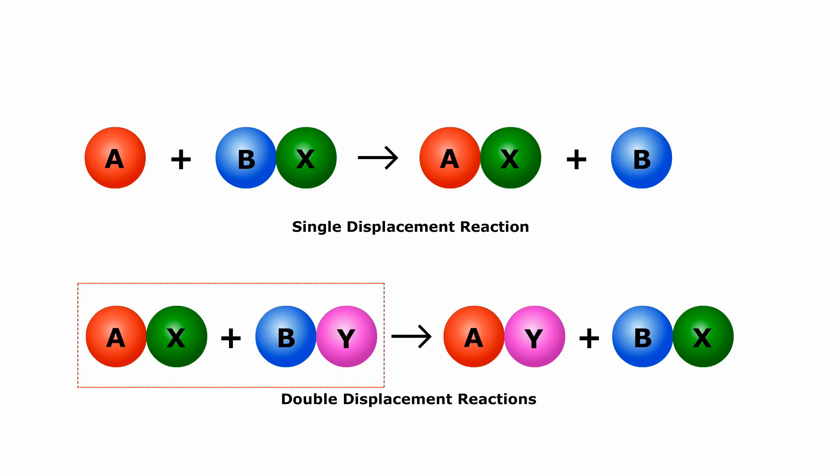In a single displacement reaction, one of the reactants is always an element and the other reactant is a compound. In double displacement reaction, both the reactants are compounds.